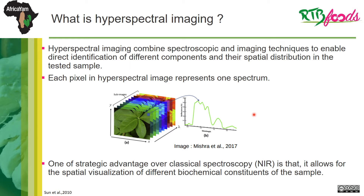So what is hyperspectral imaging? Hyperspectral imaging combines spectroscopic and imaging techniques to enable direct identification of different components and their spatial distribution information in the tested sample. A hyperspectral image has a 3D dimension, and each pixel represents one spectrum. One strategic advantage over classical spectroscopy, like near-infrared spectroscopy, is that it allows spatial visualization of different biochemical constituents of the sample.